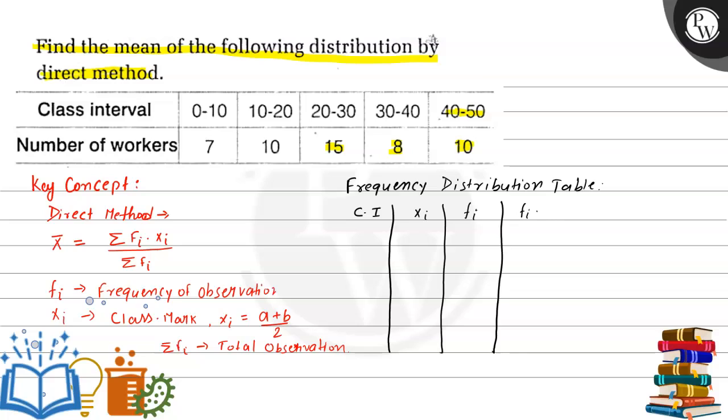So the first class interval is 0 to 10. For this interval, xi, that is class mark, will be 0 plus 10 divided by 2, that is 5. Similarly, for 10 to 20 it will be 15. For the next, 20 to 30, it is 25. For 30 to 40, this will be 35. And the last is 40 to 50, and the class mark will be 45.